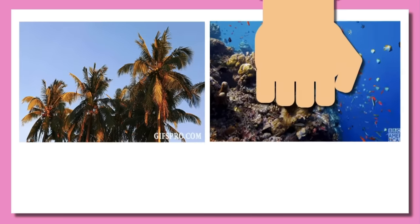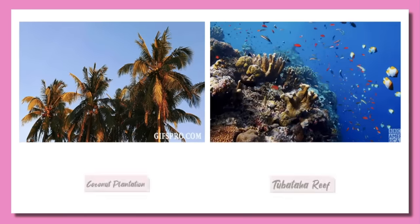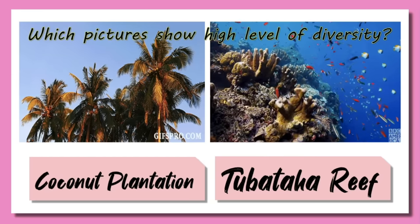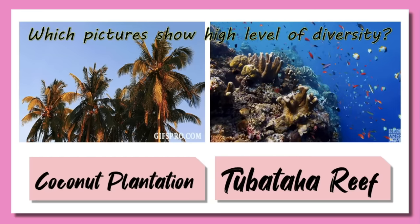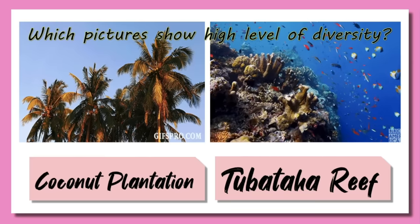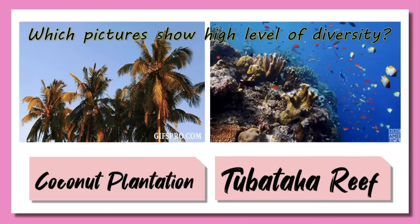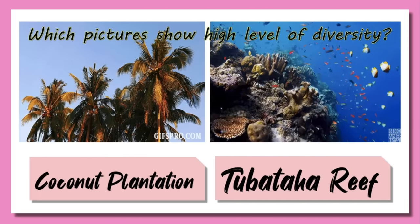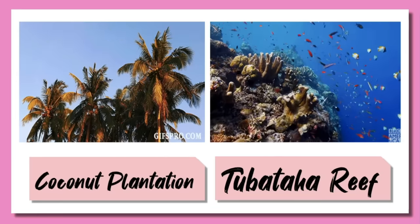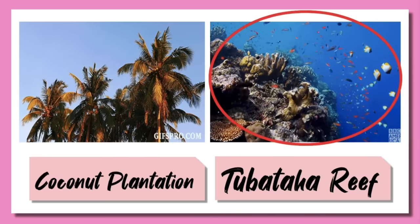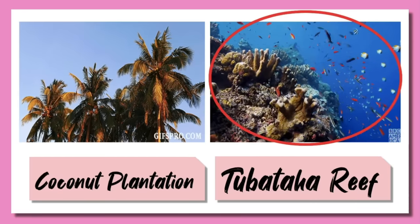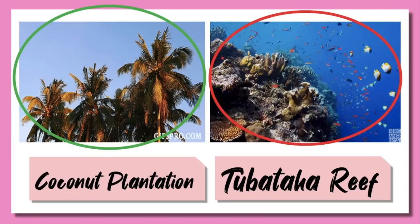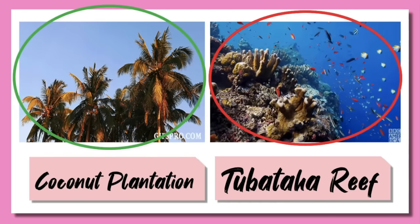Now, what can you say about these two pictures? The first picture is a coconut plantation and the second picture is the Tubataha Reef. Which picture shows a high level of diversity? That's right — Tubataha Reef, with different kinds of aquatic species, is more diverse than a coconut plantation. As you can see in the pictures, Tubataha Reef or marine ecosystem has different groups of organisms of the same species, while a coconut plantation has fewer groups, dominated by coconut trees. In short, Tubataha Reef has more population than a coconut plantation.